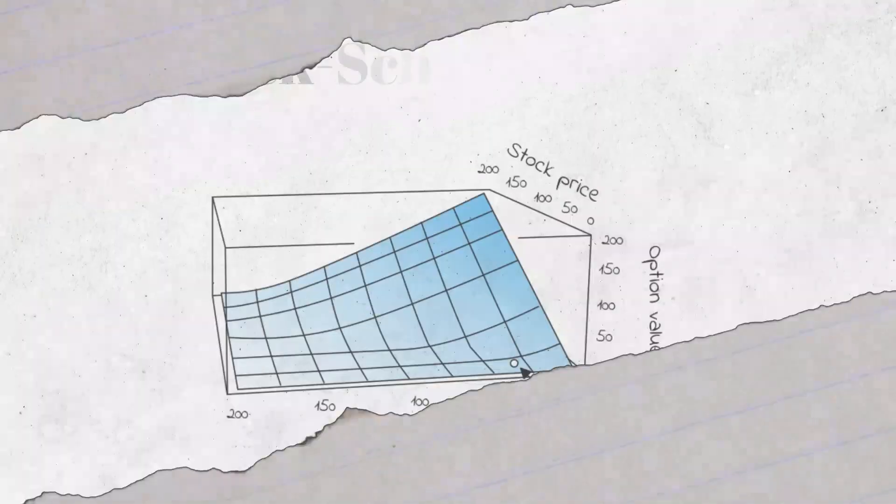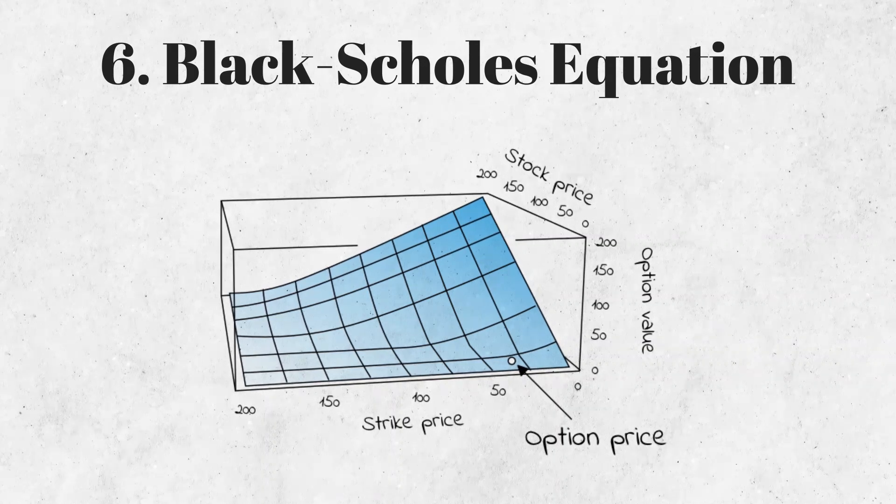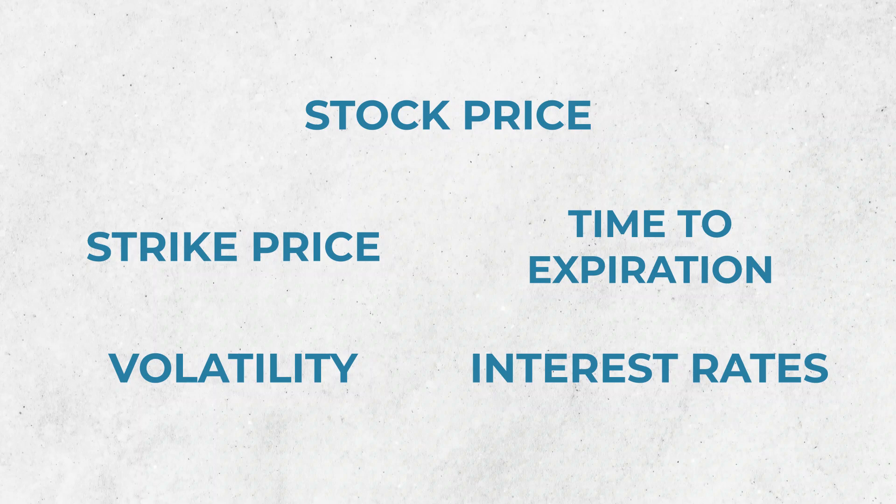In finance, the Black-Scholes equation is used for pricing options. It is a widely used formula that takes into account various factors like stock price, strike price, time to expiration, volatility, and interest rates to determine the fair value of an option.